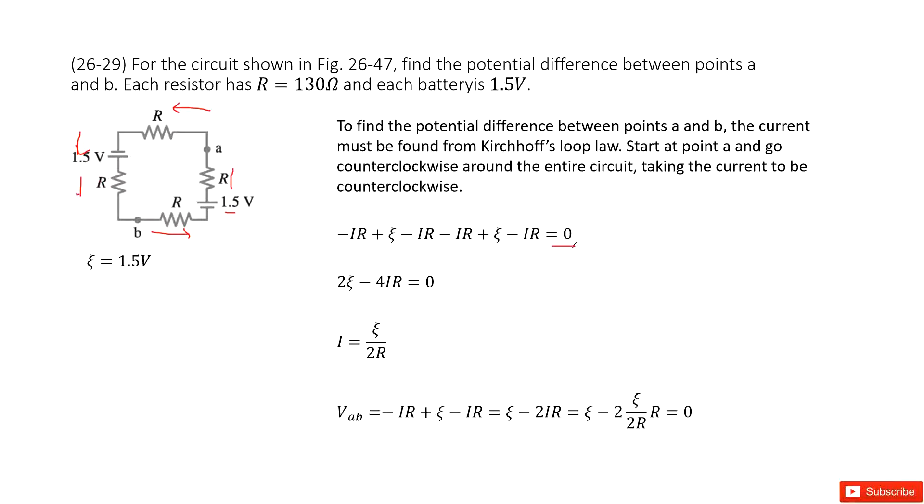Simplifying this equation, we get 2ε - 4IR = 0. Solving this equation, we can get the current I = ε/(2R).